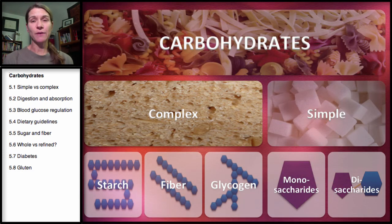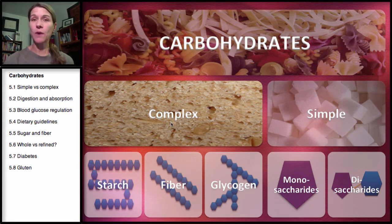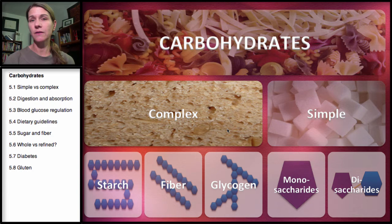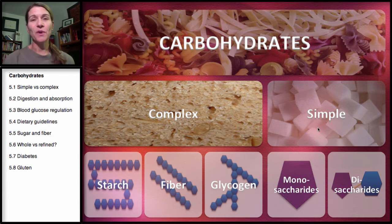When we look at carbohydrates, there are two categories: complex carbohydrates and simple carbohydrates. When you think of complex carbohydrates, most people think of breads and pastas. Simple carbohydrates are mostly sugar. We're going to learn about each of these categories.